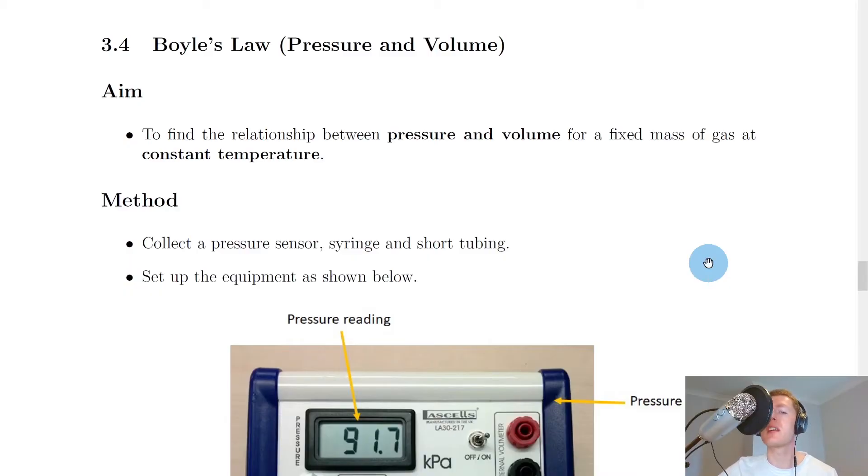Now for this Boyle's Law experiment, we're going to break it down into the steps of a scientific report so that you could reproduce this experiment in class. The aim is to find the relationship between pressure and volume for a fixed mass of gas at constant temperature. What we mean by a fixed mass of gas is keeping the same number of particles in the container. For convenience, imagine 20 particles in your container, meaning the number stays at 20 and won't change. We're keeping temperature constant as well, so temperature should stay the same throughout the experiment.